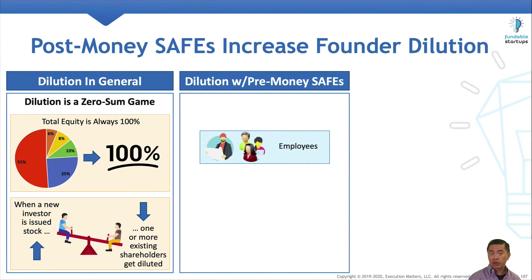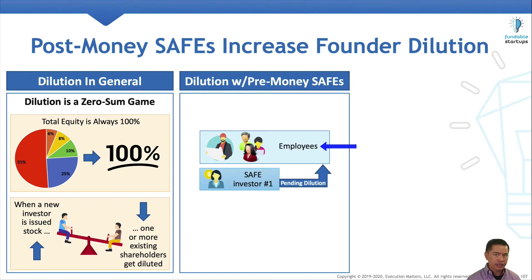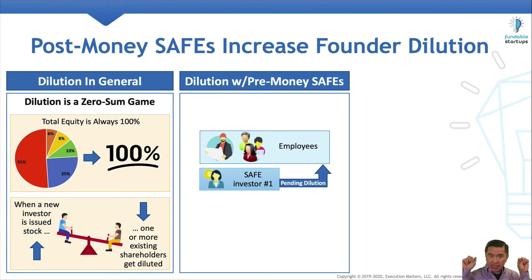Let's look at how this works with a pre-money safe. In this first scenario, before raising any outside investment, the only shareholders are the founders and employees. The founders soon close their first safe, which results in the impending dilution of all existing shareholders — which at this time are just the employees. Technically, there is no dilution yet because the safe holders don't yet hold any stock. They only hold the right for stock at some point in the future when a qualified equity funding round closes. That's why this diagram says pending dilution.